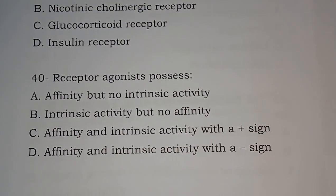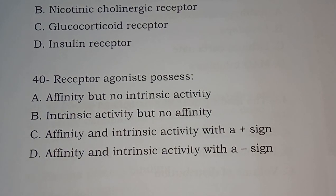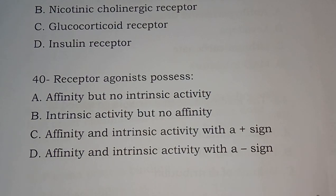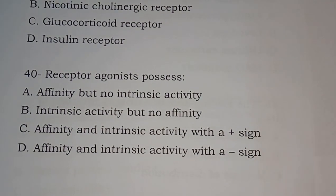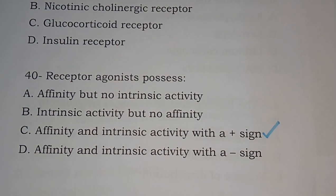Question 40: Receptor agonists possess affinity but no intrinsic activity; intrinsic activity but no affinity; affinity and intrinsic activity with a positive sign; affinity and intrinsic activity with a negative sign. The correct answer is receptor agonists possess affinity and intrinsic activity with a positive sign.